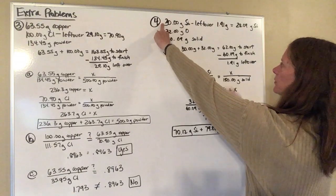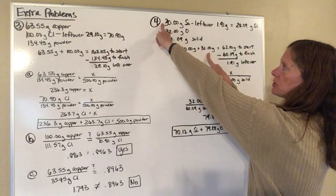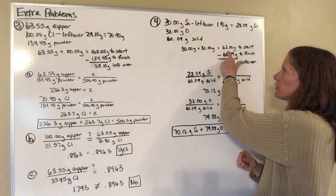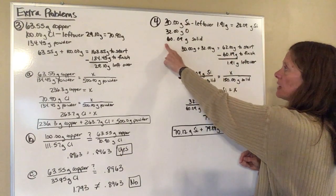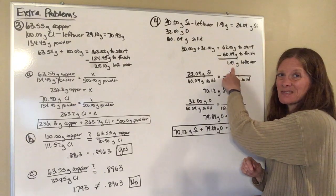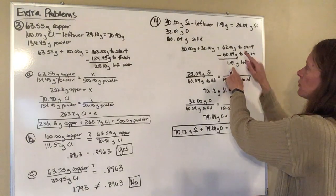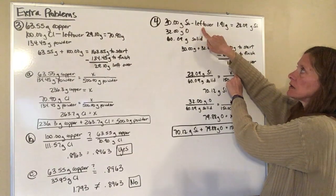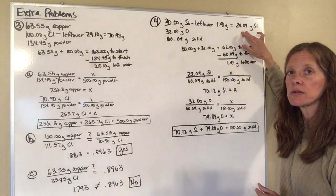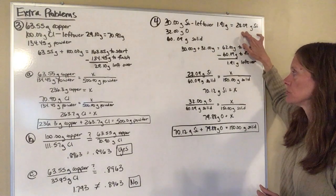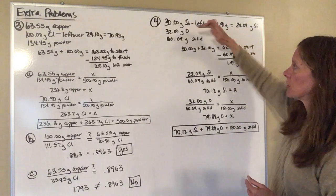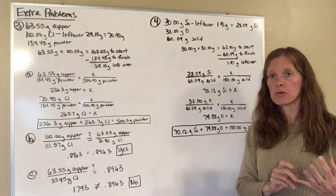I need to figure out how much silicon was actually used. So what did I start with? 30 grams of silicon plus 32 grams of oxygen was 62 grams of what I started with. I only made 60.09 grams of solid. So that's 1.9 grams that's leftover. That leftover was leftover silicon. So when I subtract these two numbers, that gives me 28.09 grams of silicon that I actually used. Okay. So I now know what the exact numbers were that gave me that particular solid.